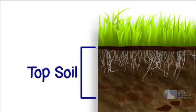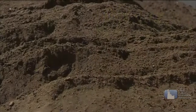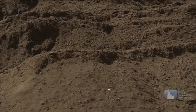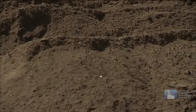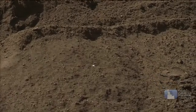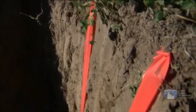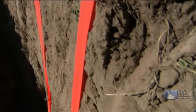Topsoil is the layer you see, the layer you typically walk on. It contains dark organic material which is made up of decayed plant and animal matter. Topsoil can be about six inches thick.